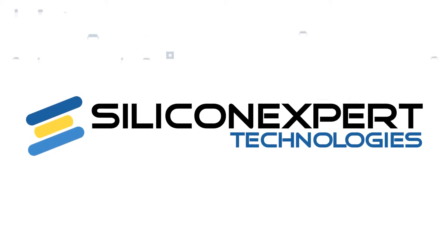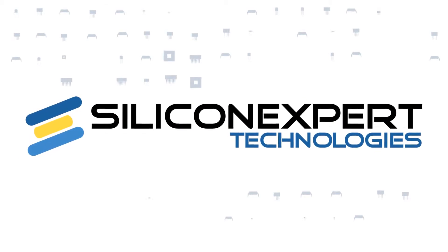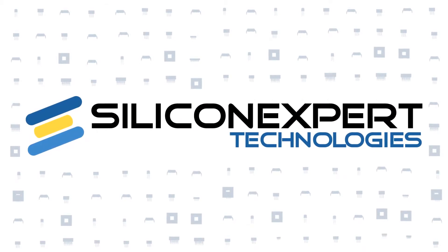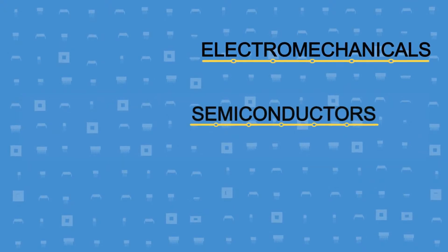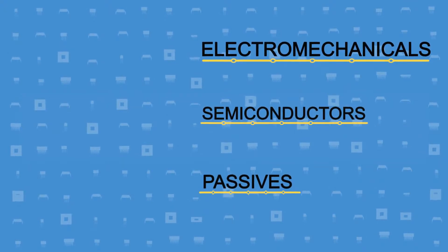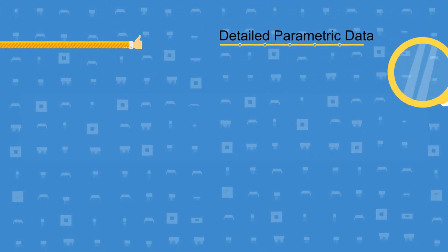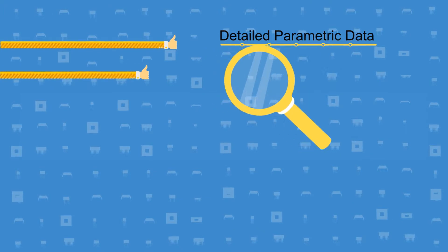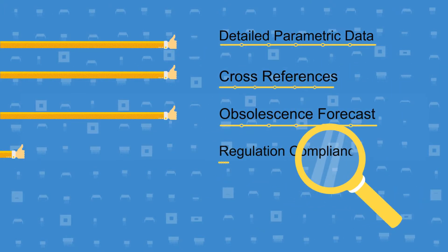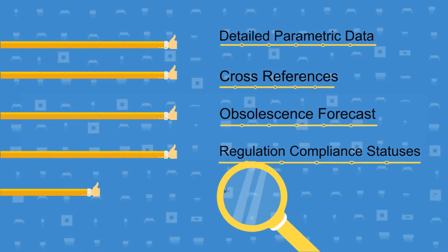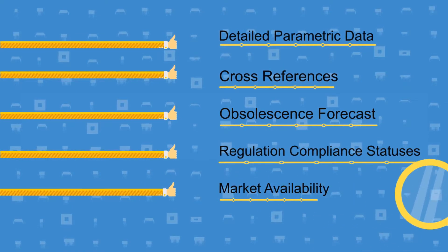Silicon Expert delivers. With a massive database of hundreds of millions of components, ranging from electromechanical, semiconductors and passives, Silicon Expert tools provide you the data you need instantly. With a single search, you can find detailed parametric data, cross-references, obsolescence forecast, regulation compliance statuses, market availability and more.